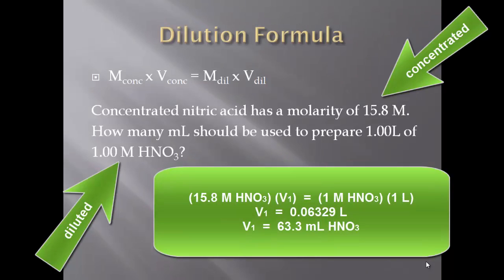So I would take my 15.8 molar times V1, because I want to know how much volume of that concentrated solution I need, equals — they want to make one liter at one molar. So it's pretty simple: one liter times one molar HNO3. Basically, all you're doing is dividing one by 15.8. You get 0.06329 liters, but they want to know how many milliliters, so moving the decimal place over three times gives 63.3 milliliters of nitric acid.